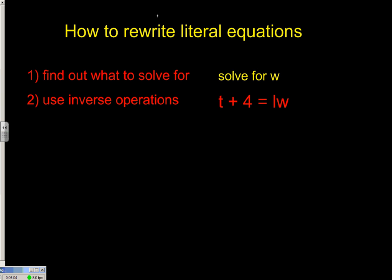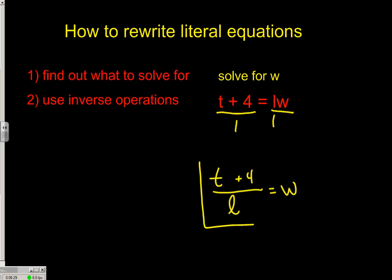Here's a random equation. If we want to rewrite the literal equation to solve for w, just get the w all by itself. l is multiplying w, so we'll divide both sides of the equation by l. So t plus 4 is going to be divided by l, equals w. It's all about isolating the variable — getting the variable you want by itself alone on one side of the equation. It doesn't really matter if you get a nice neat number or just a hodgepodge of other variables. We're just rewriting these literal equations to make it be what we want it to be.